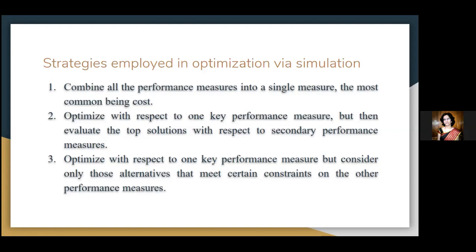The third strategy: optimize with respect to one key performance measure, but consider only those alternatives that meet certain constraints on the other performance measures. For instance, the MHS could be optimized with respect to expected cost for those alternatives whose expected cycle time is less than a given threshold.